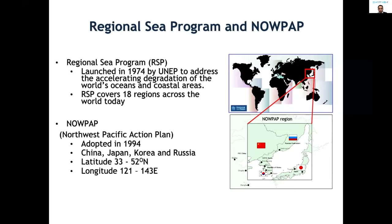Let me introduce where we come from. We are working for the Regional Sea Programs of the United Nations Environment Program, which was launched in 1974 by UNEP. This Regional Sea Programs right now covers 18 regions across the world. The Northwest Pacific Action Plan, we call it NOWPAP, is one of the Regional Sea Programs of the UNEP, and it was adopted in 1994.